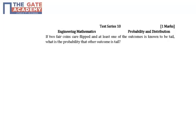This question is from probability and distribution. The question given is, if there are two coins which are fair, are flipped and at least one of the outcomes is known to be tail.